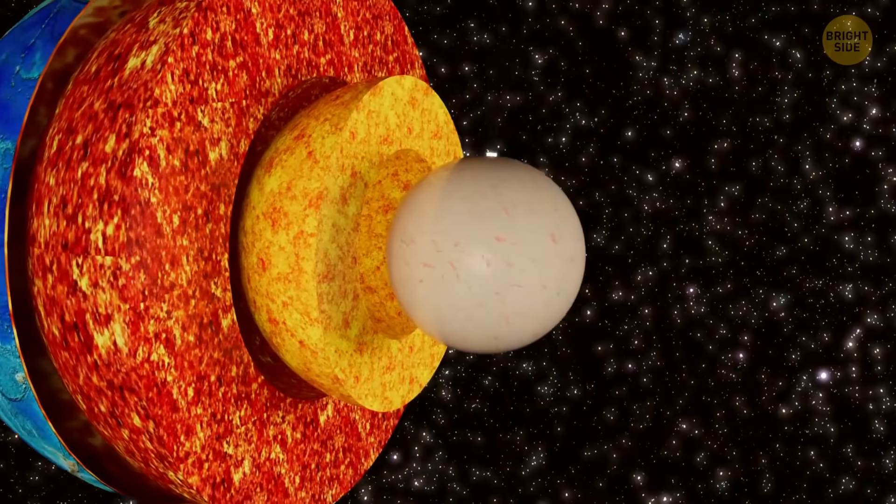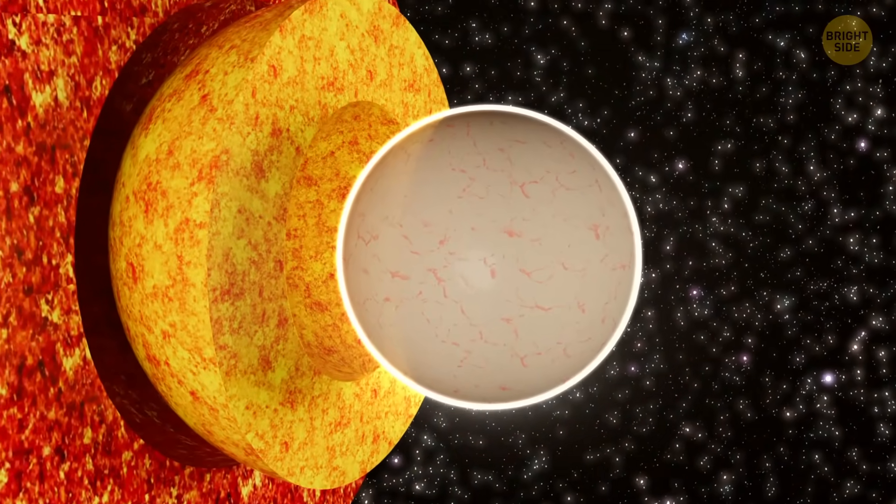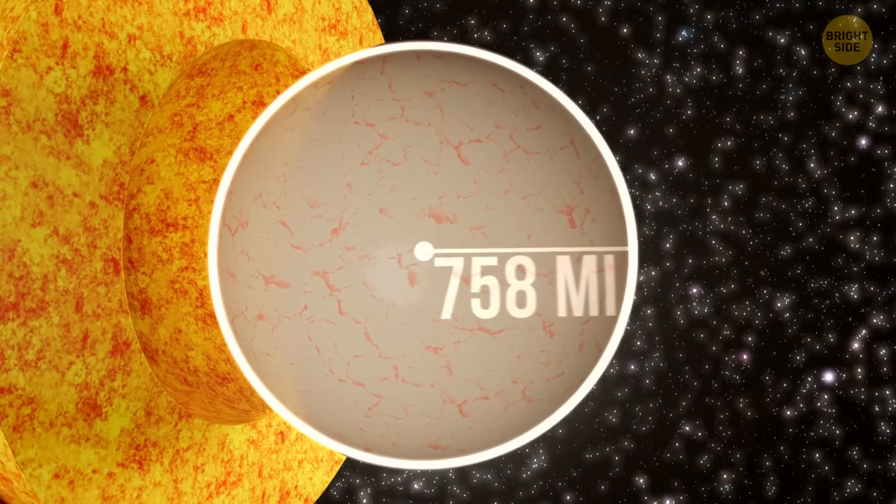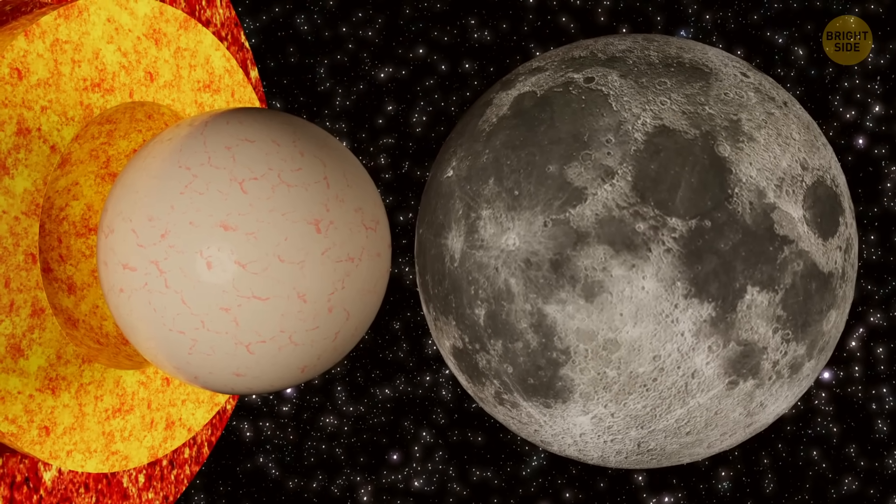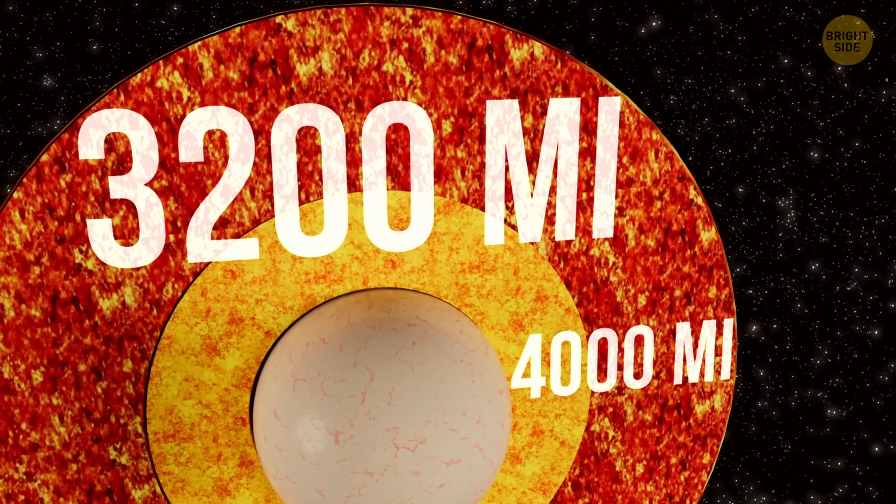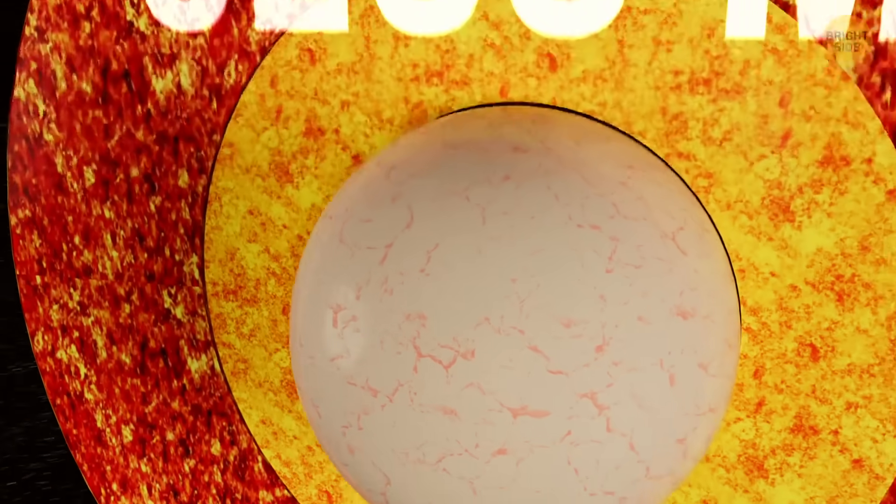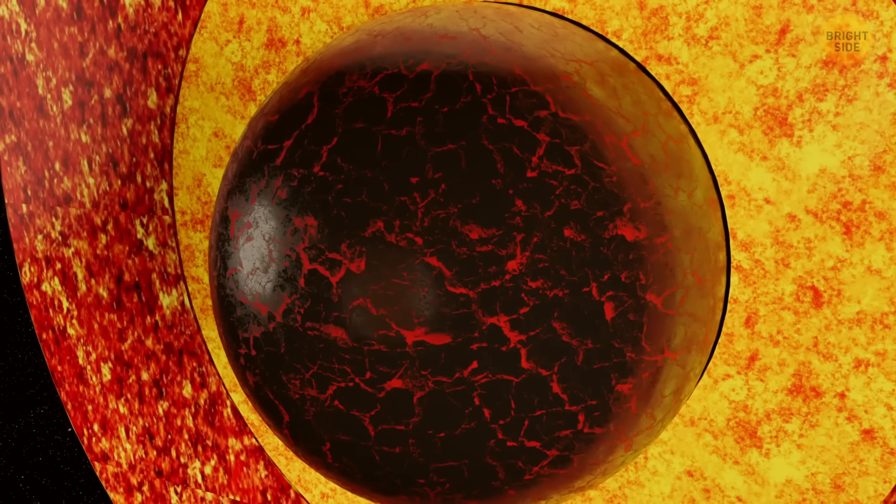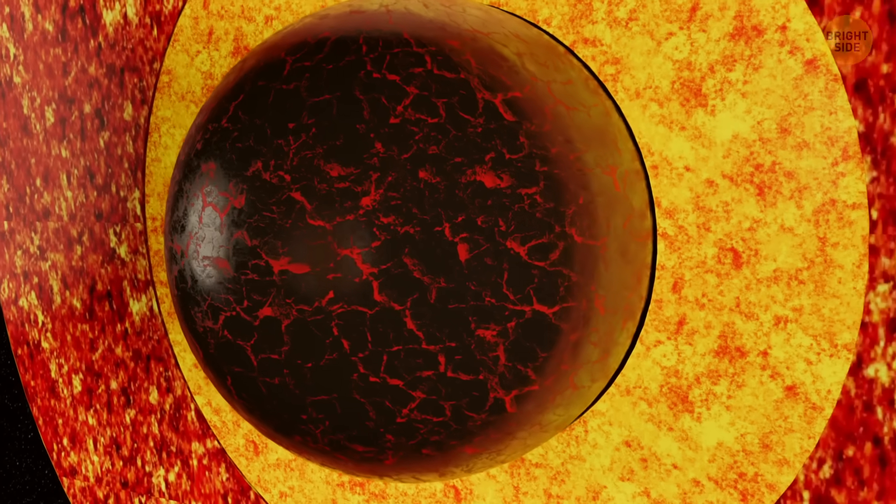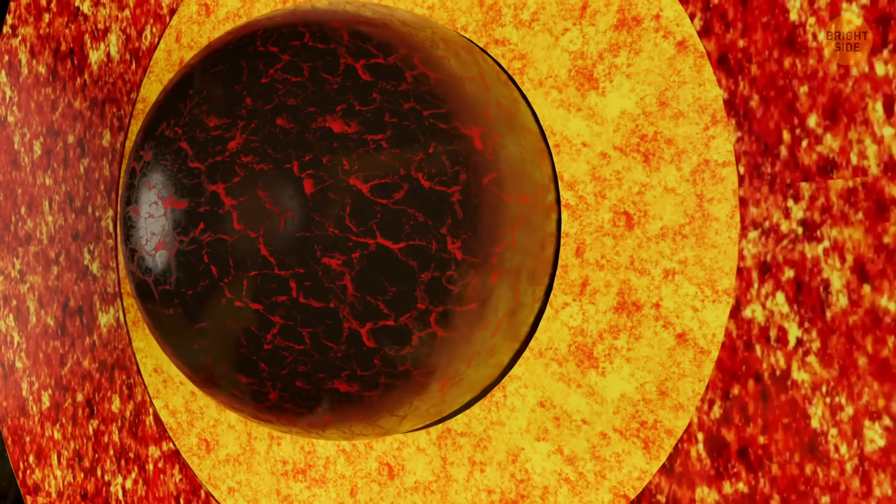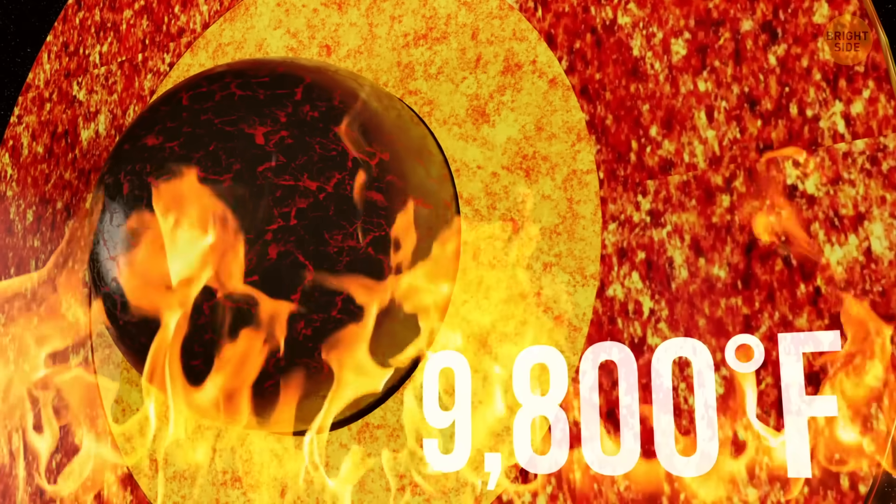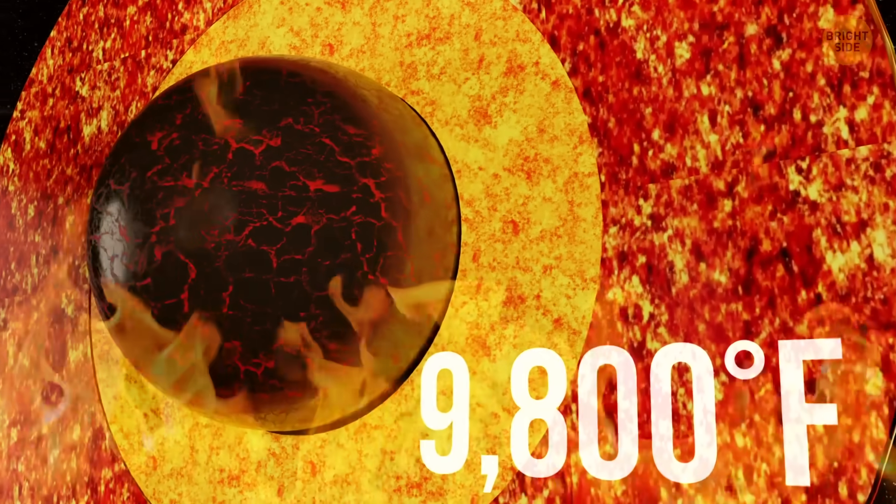At the very center of Earth is the inner core, a solid metal ball about 758 miles in radius, which is about three-quarters the size of the Moon. It sits about 4,000 to 3,200 miles below the surface. The inner core is incredibly dense. It spins a bit more slowly than the rest of Earth, and is intensely hot, reaching temperatures of 9,800 degrees Fahrenheit. It's like the surface of the Sun.